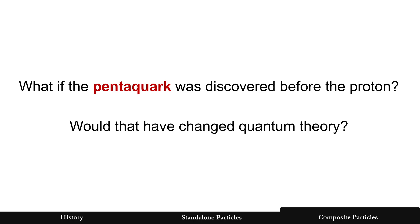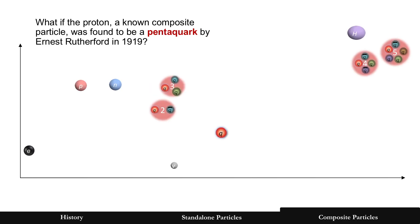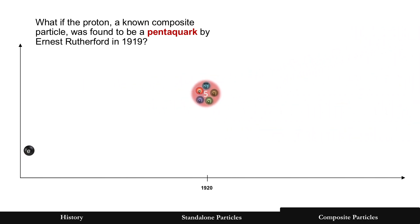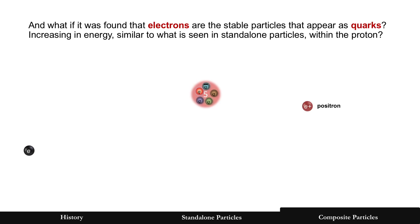Now let's try to explain composite particles, starting with another question: what if the pentaquark had been discovered before the proton? Would that have changed quantum theory? Let's assume Ernest Rutherford found the proton to be a composite particle — he did not know that at the time, but we know it to be true now. And let's assume the 2015 CERN discovery of the pentaquark was what he found back in 1919. How would that change things? We need one more assumption: what if electrons are the stable particles that appear as quarks?